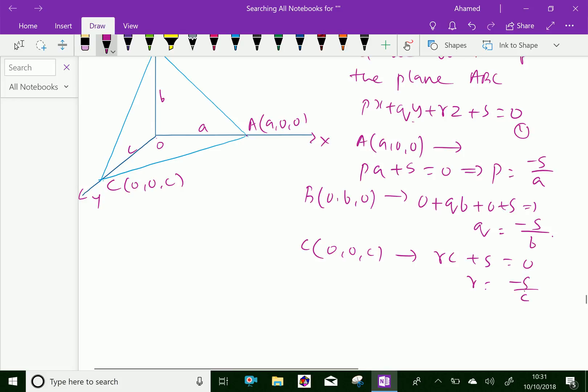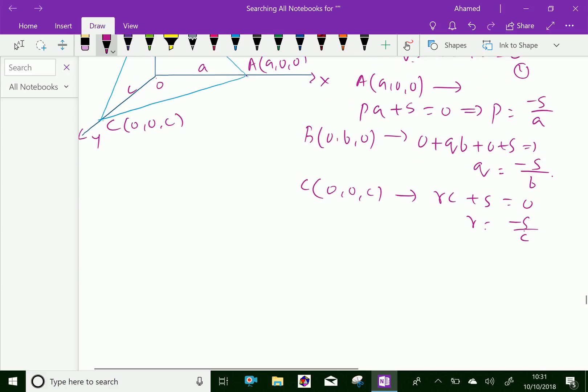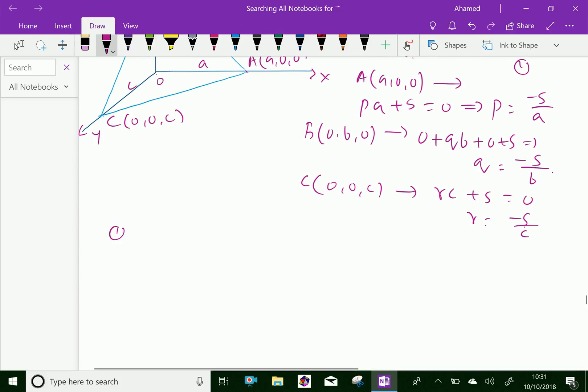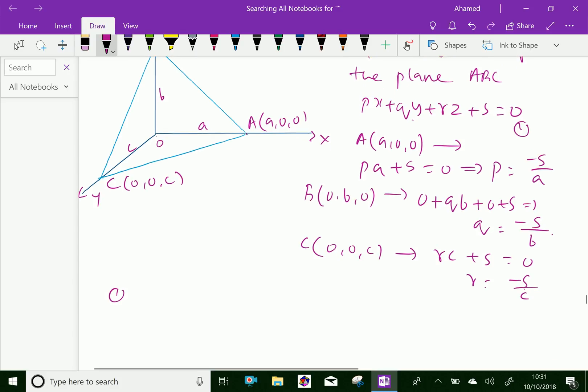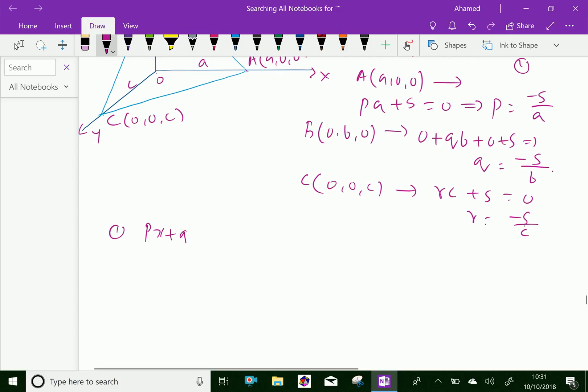Now substitute these values in equation 1. Therefore, our equation is P times X plus Q times Y plus R times Z plus S equals 0. Substitute the values, then P is minus S by A times X minus S by B times Y minus S by C times Z plus S equals 0.